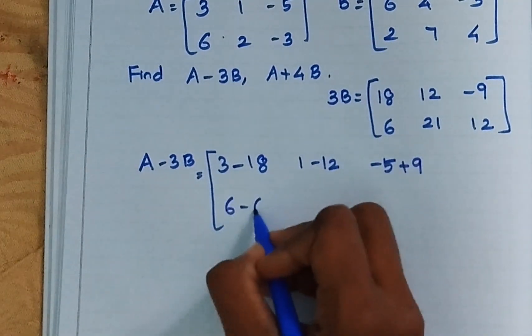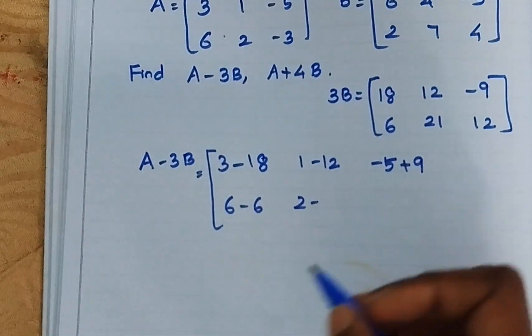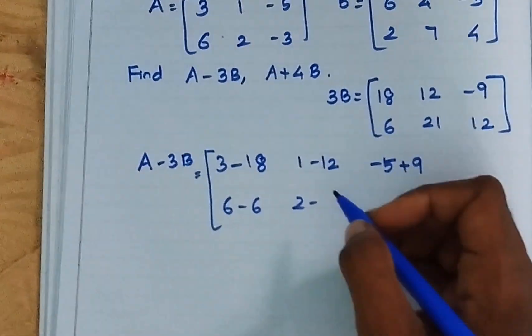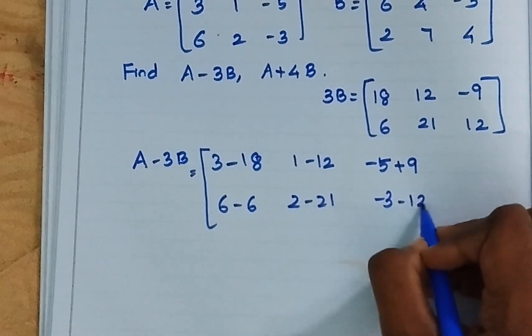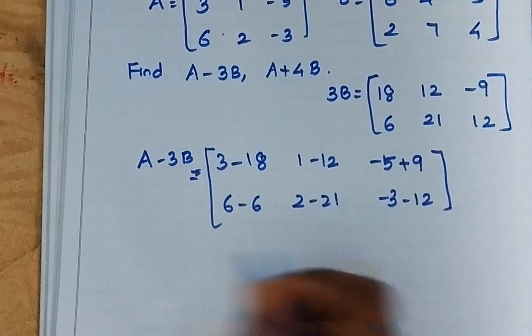6 minus 6. 2 minus 21. Minus 3 minus 12. So now we have written A minus 3B. Now I am going to solve this.